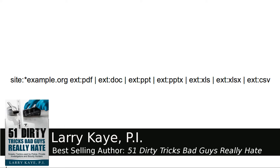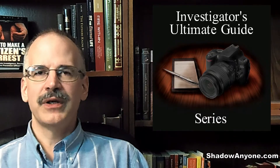What this allows you to do is look for specific file extensions. For example, the extension PDF — what PDF files does this website have available? The extension DOC — what Word documents or other word processing documents use that extension? Or PowerPoint, or Excel — you can look for spreadsheet-type files they have on their website that are legally accessible to the general public.